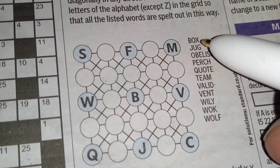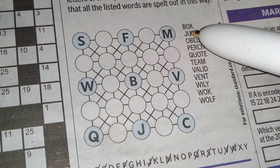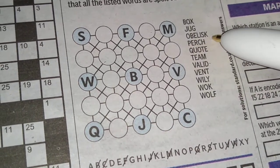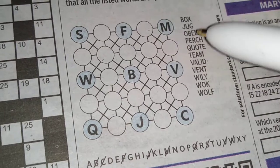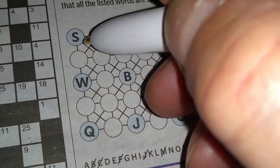So we've got box B. We've got an X there. So jug, J. Obelisk. Ob-el-isk. Okay, so the K is definitely going to be here.